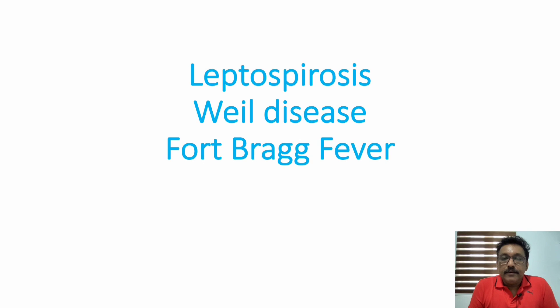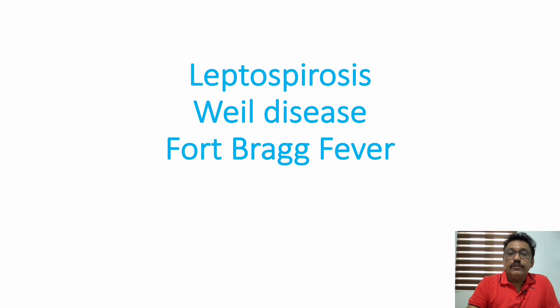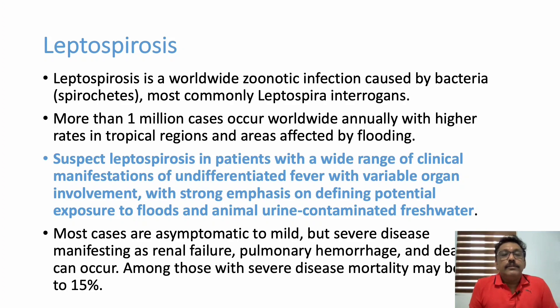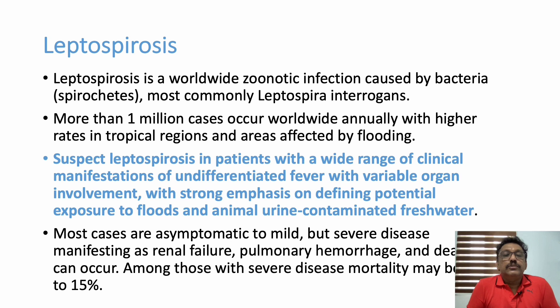Welcome to ATCM, the emergency medicine channel. Today let us discuss leptospirosis, also known as Weil's syndrome or Fort Bragg fever. Leptospirosis is one of the common zoonotic diseases in our country. It is commonly produced by a spirochete bacterium, Leptospira interrogans. There are many different organisms responsible, but Leptospira interrogans is the most common. Nearly more than one million cases occur annually worldwide, mainly in third world countries, especially where floods are common and in tropical regions.